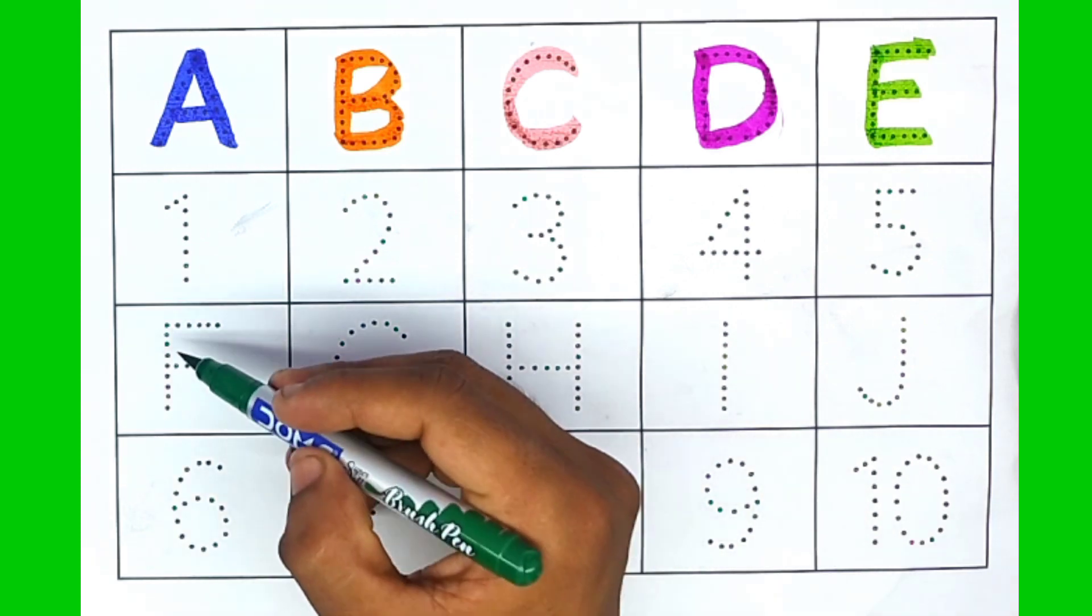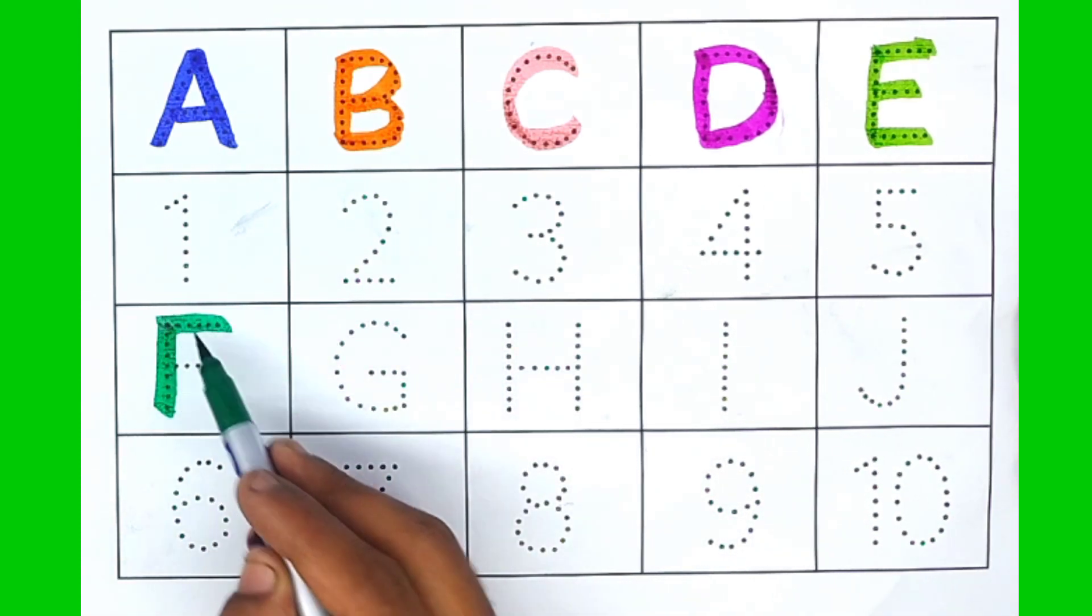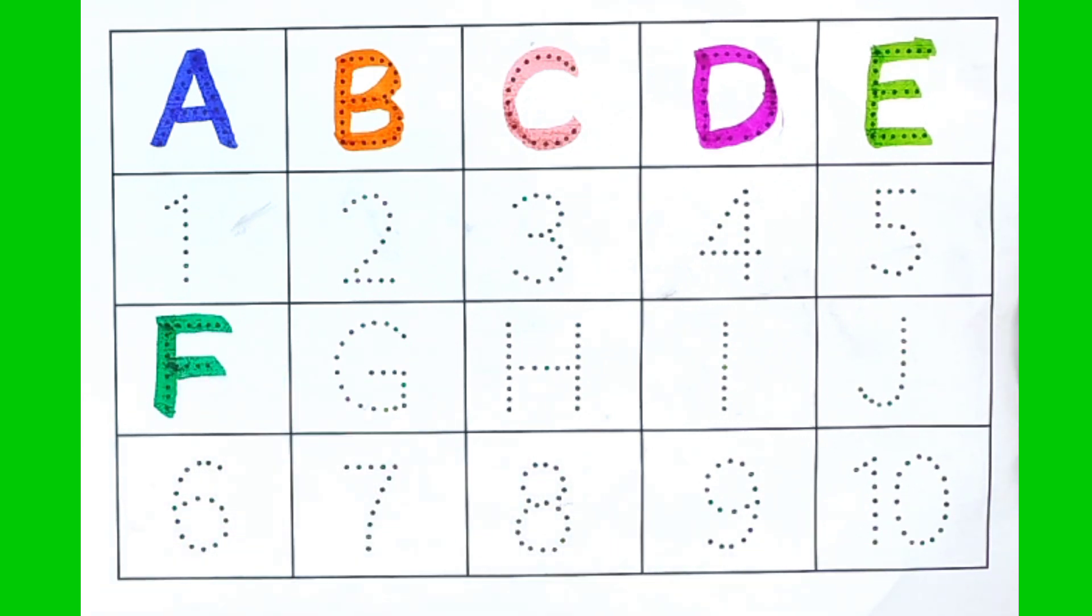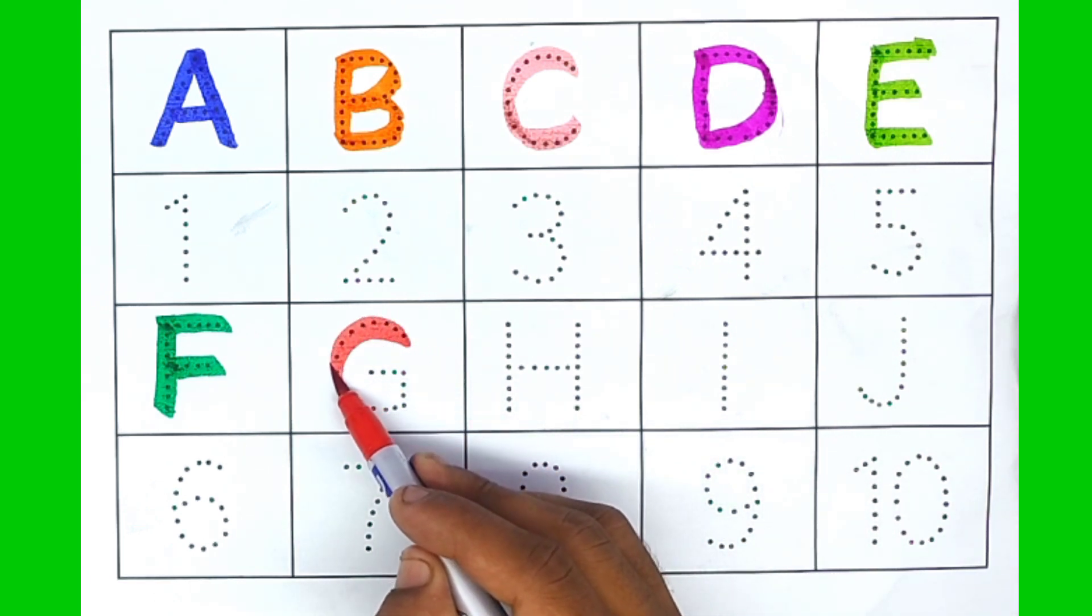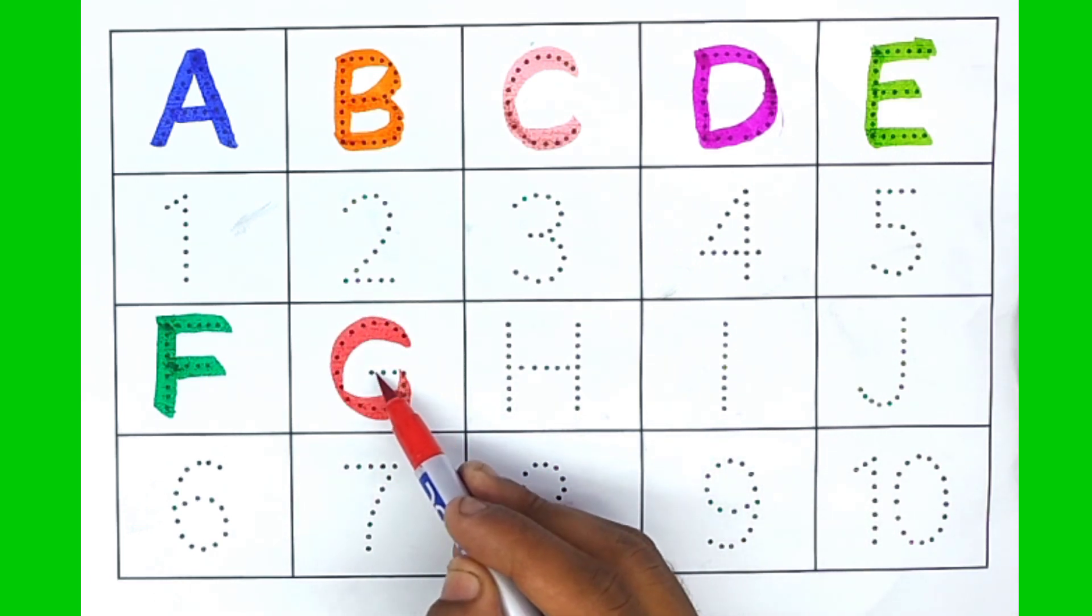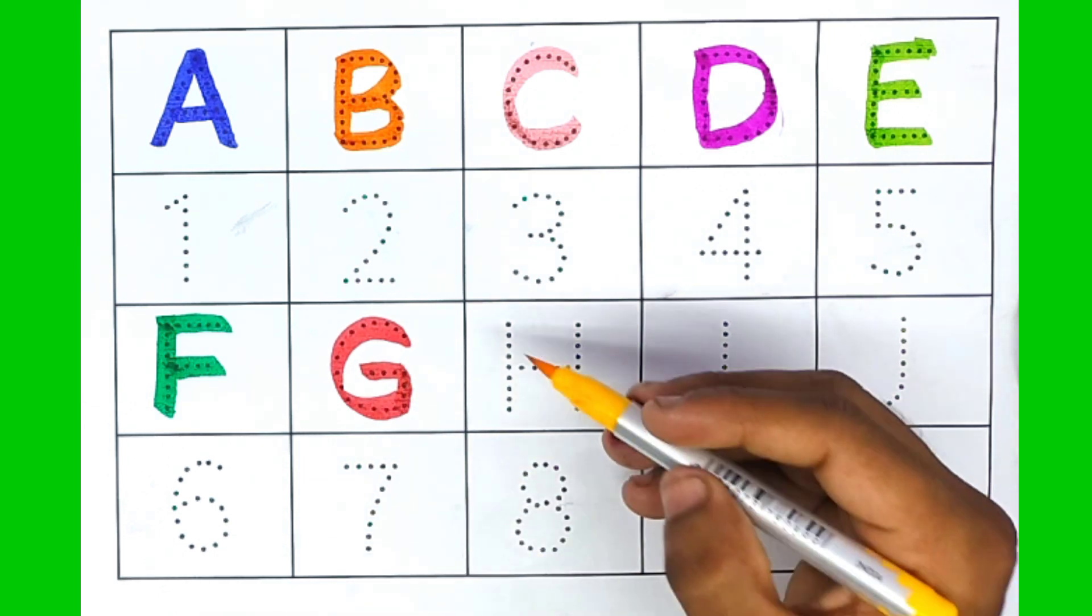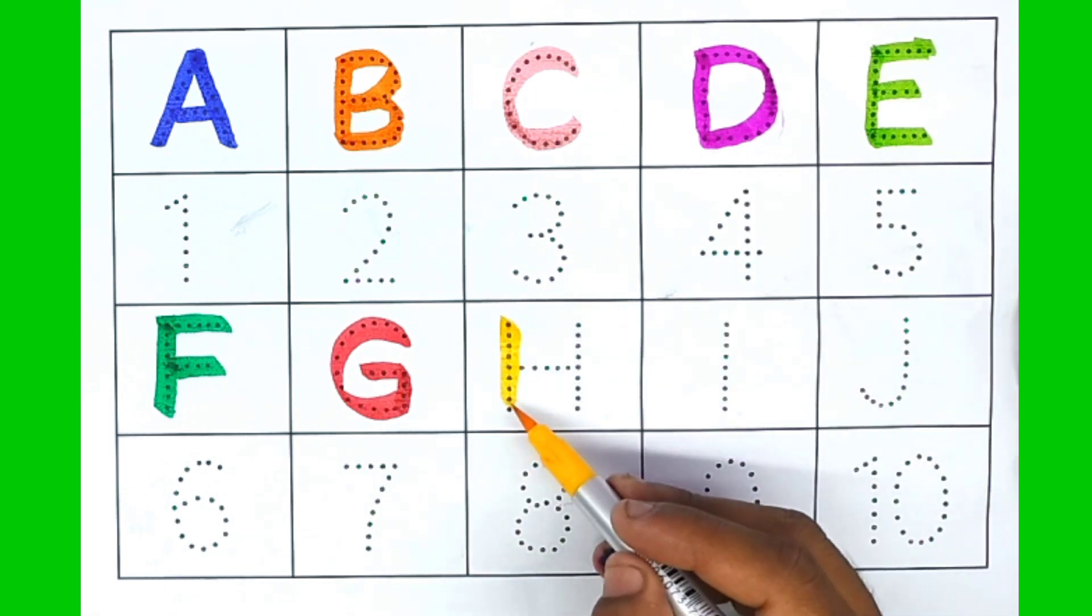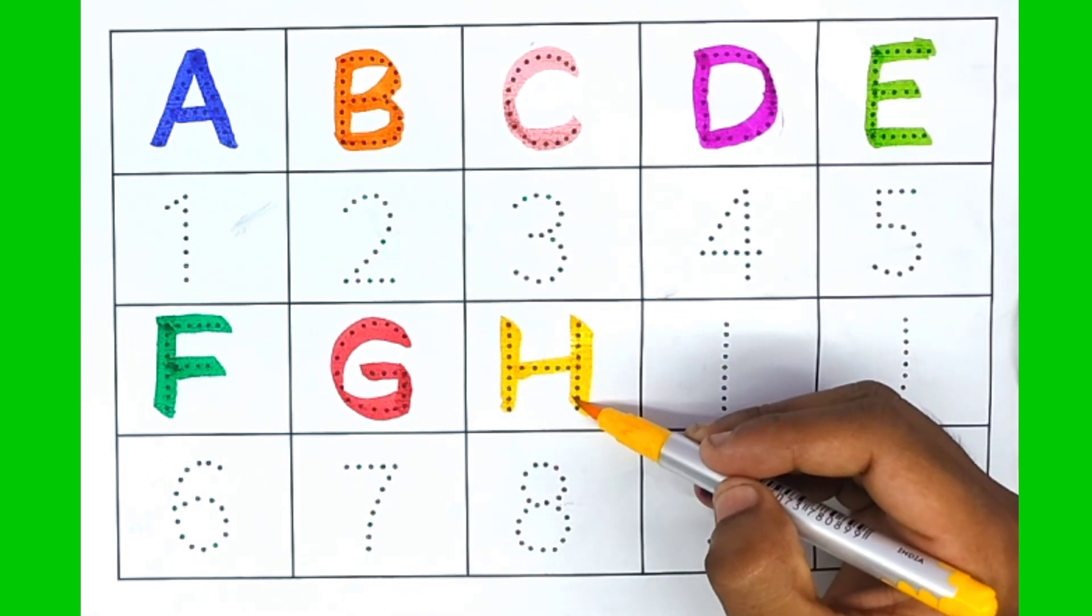Green color. F, F for fish. Red color. G, G for grapes. Yellow color. H, H for hen.